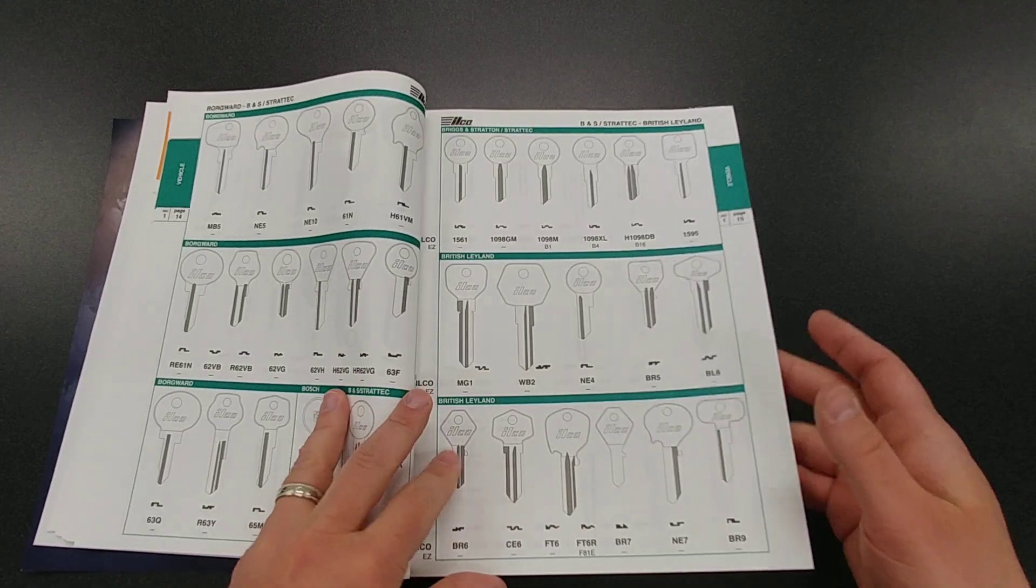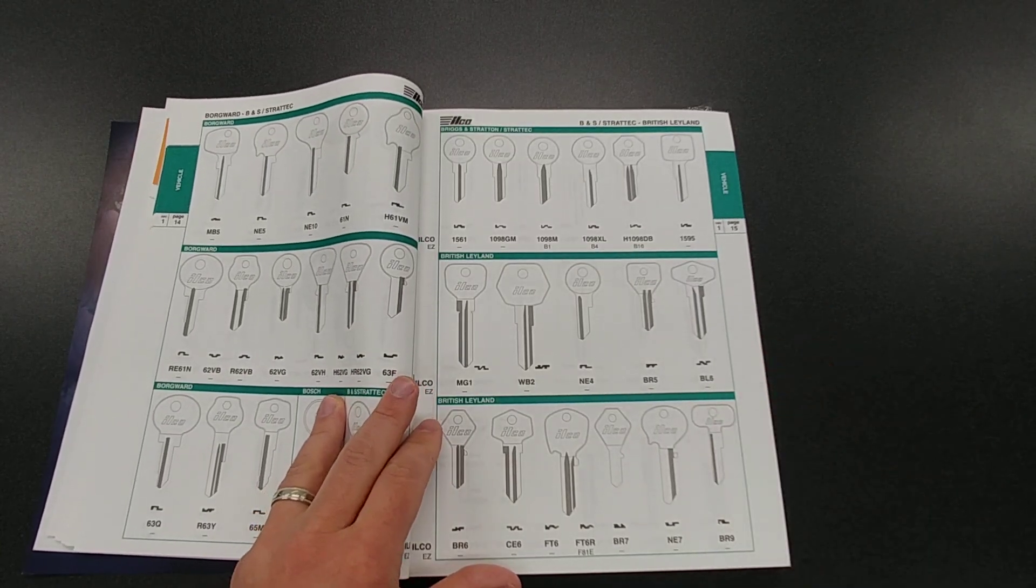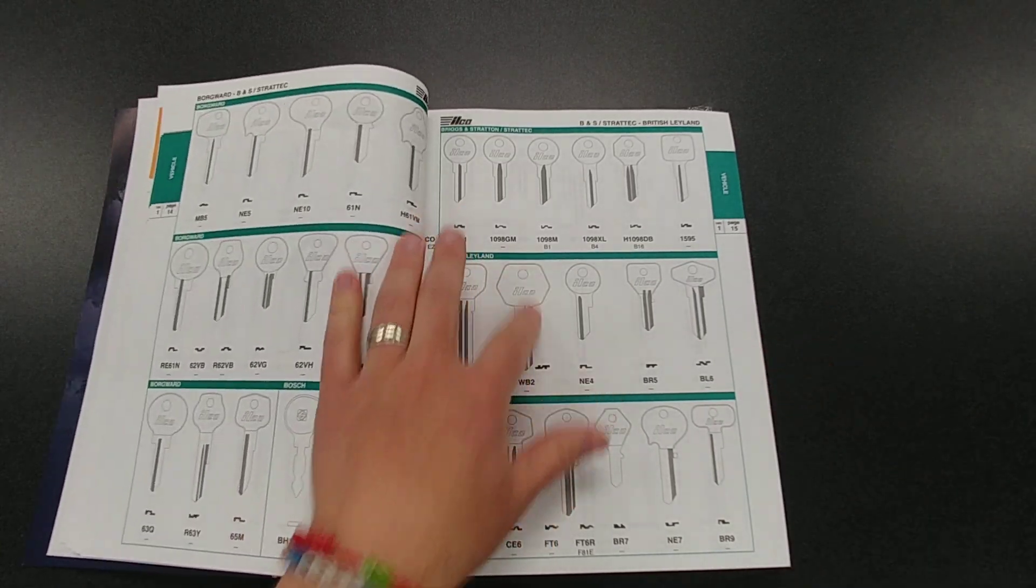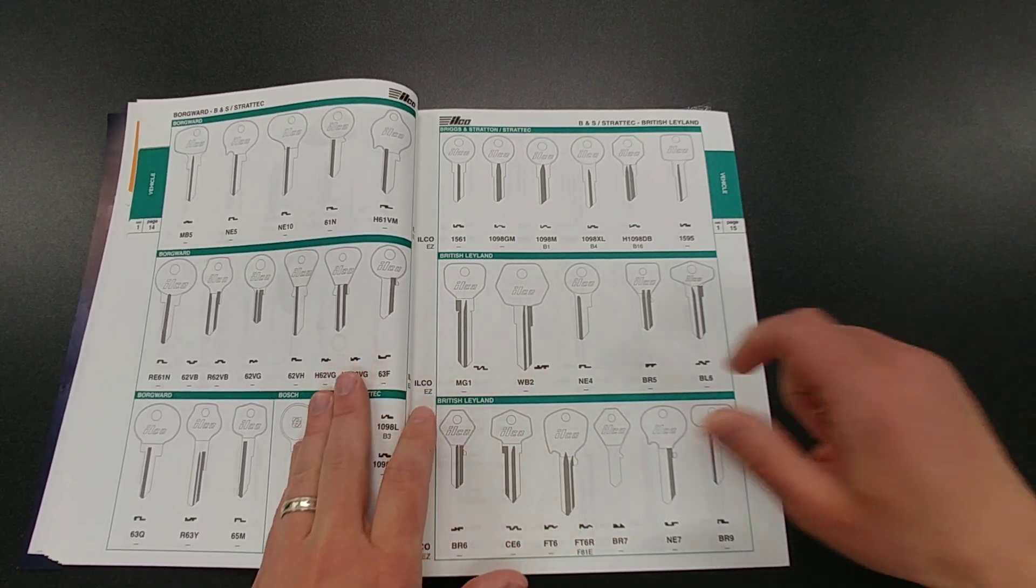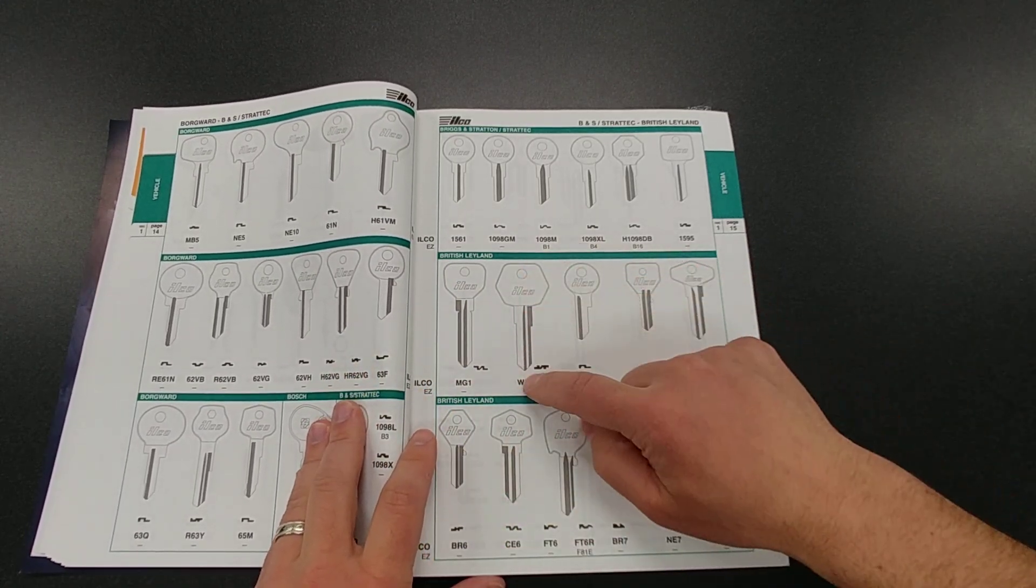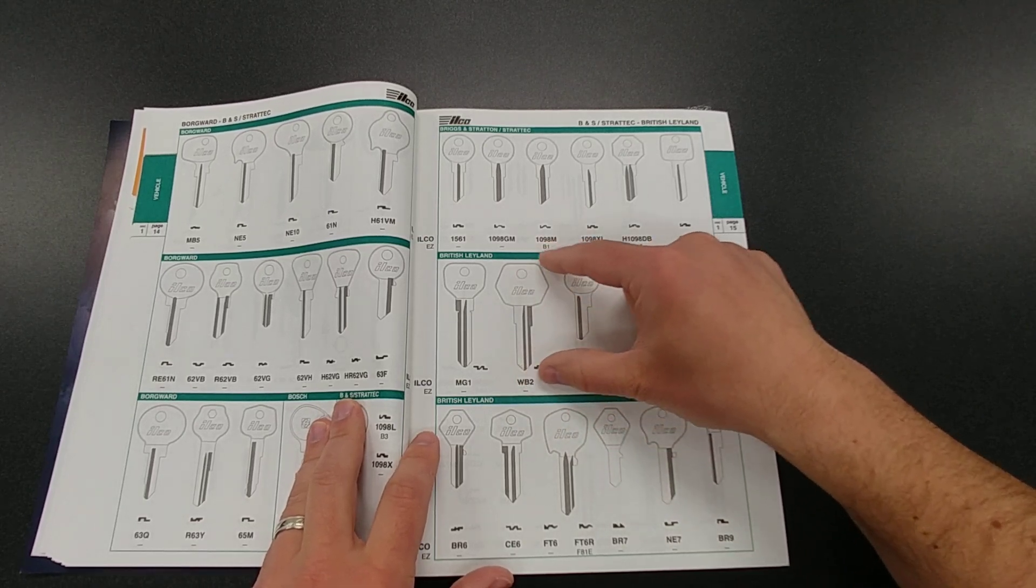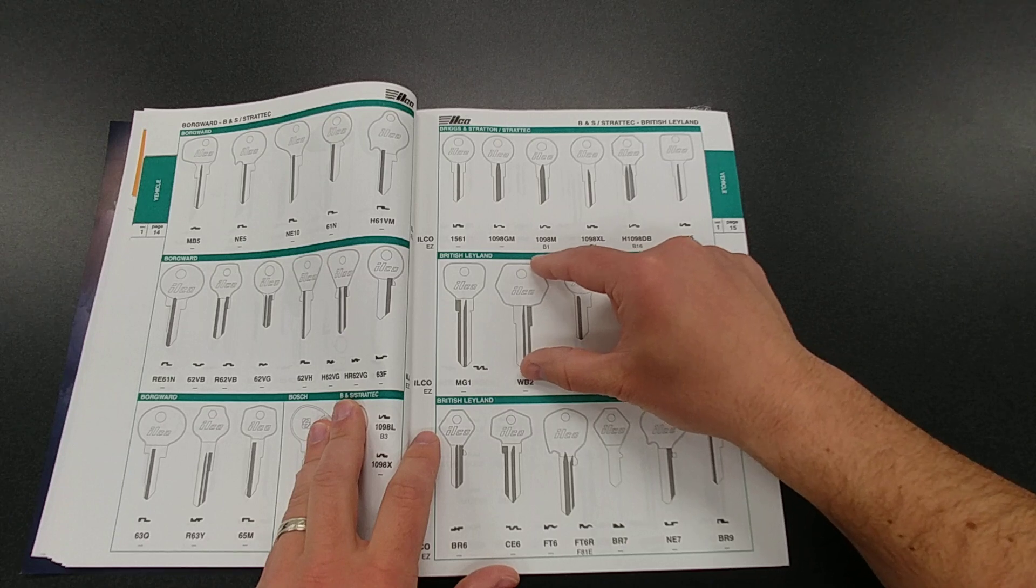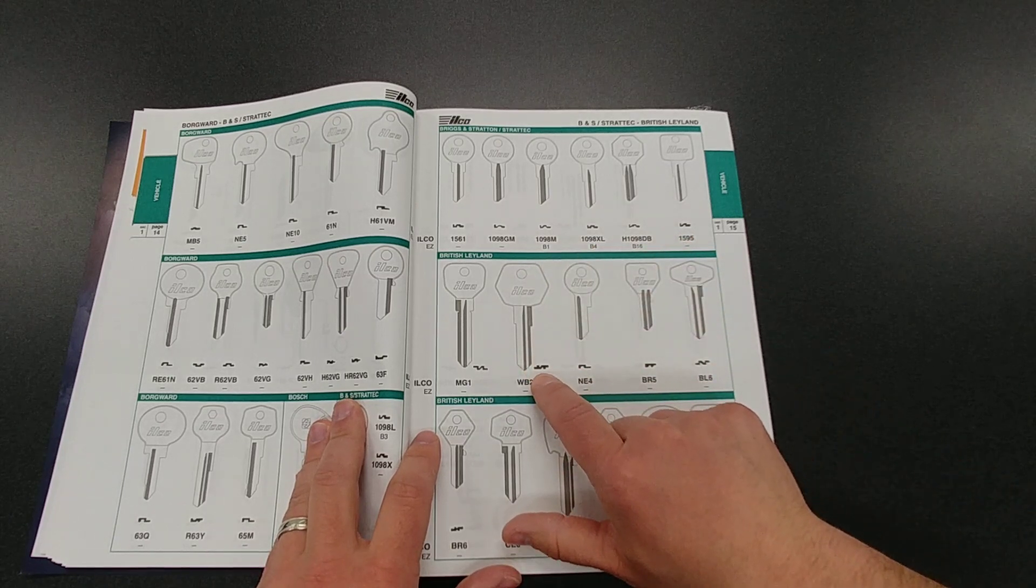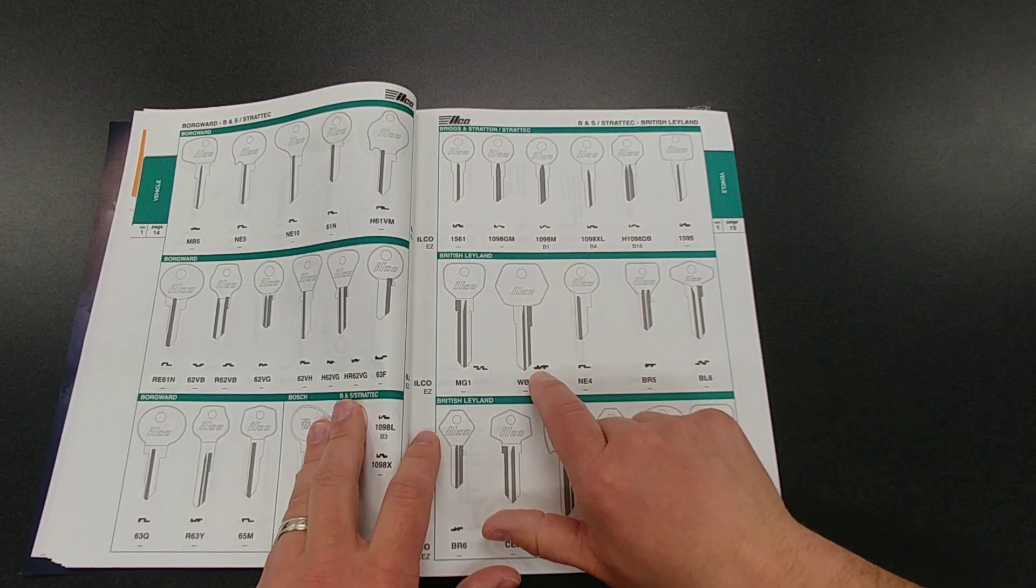But all right, so let's just stop here for a moment and I'll show you. So when you're looking at the key, let's look at this WB1 key right here. It's going to show a 100% scale picture of the key or drawing of the key. And then it's going to show this little profile of the key right here.